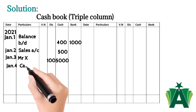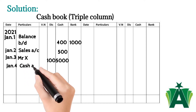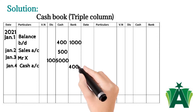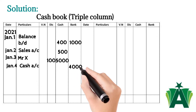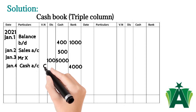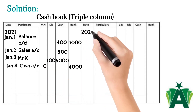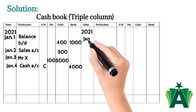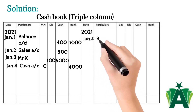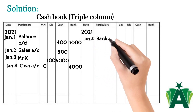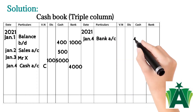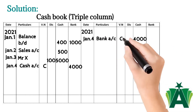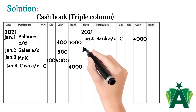January 4th — deposited into bank $4,000. Here two accounts are involved: bank account debit and cash account credit. The $4,000 is recorded on the debit side of the cash book in the bank column with reference to cash account, and 'C' (denoting contra) is written in the voucher number column. The same amount is recorded on the credit side in the cash column with reference to bank account, and 'C' is written in the voucher number column.